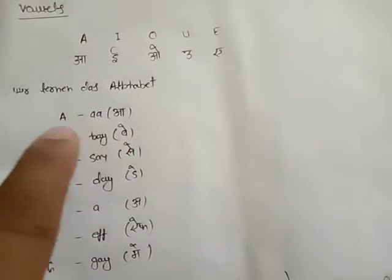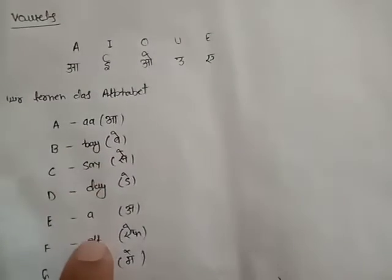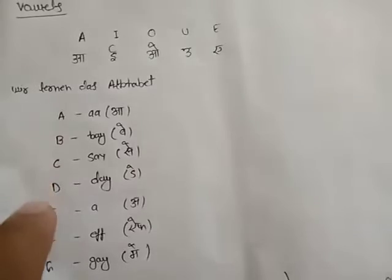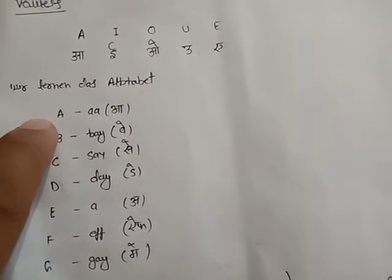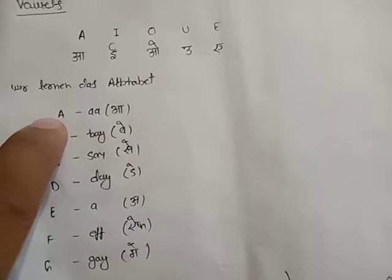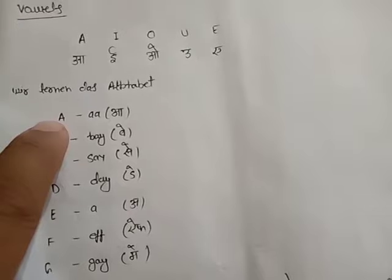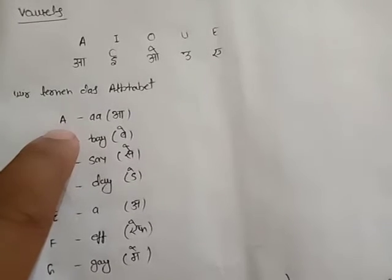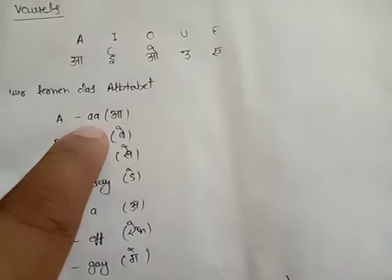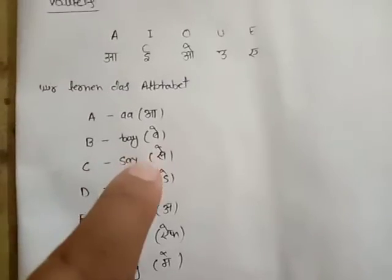You're not to be confused between the letter and the pronunciation. This is only for your understanding. The letter A will be written as A only, but when you pronounce it in a German word, the sound of this letter will be like 'aa'. I hope you understand, just like B 'bay', C 'say', D 'day', E 'a'.